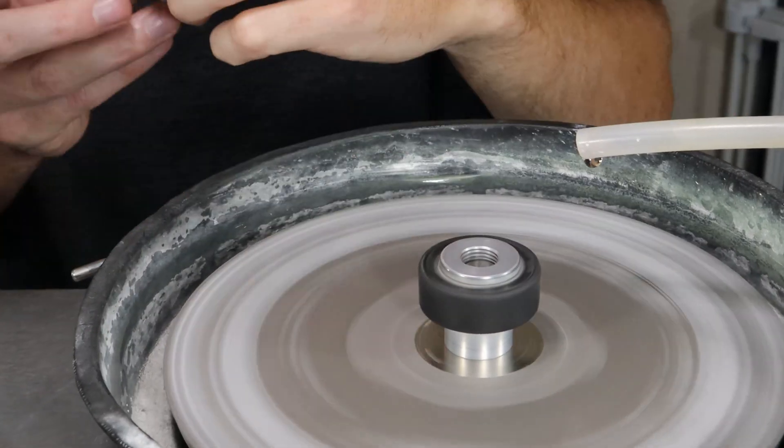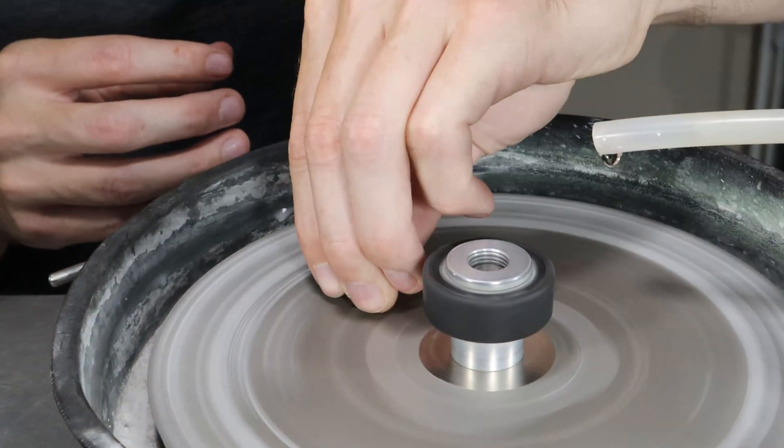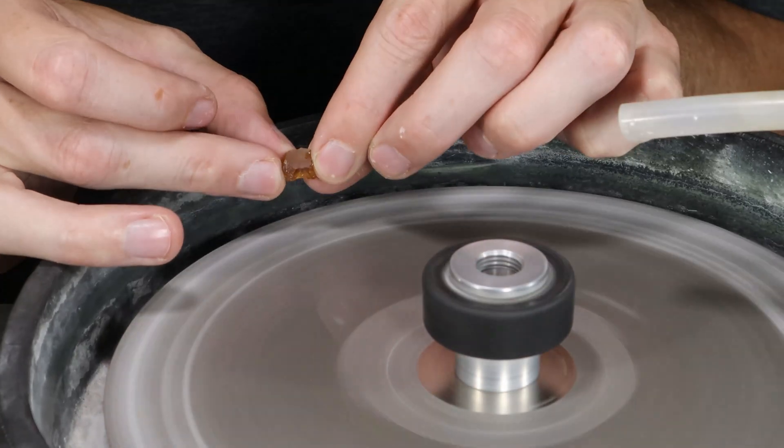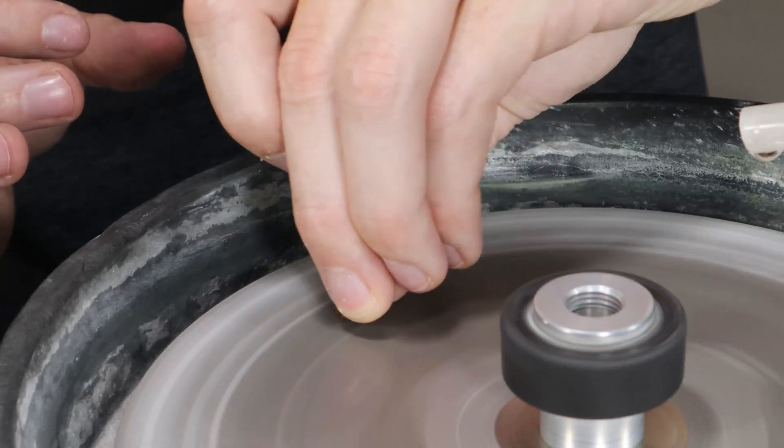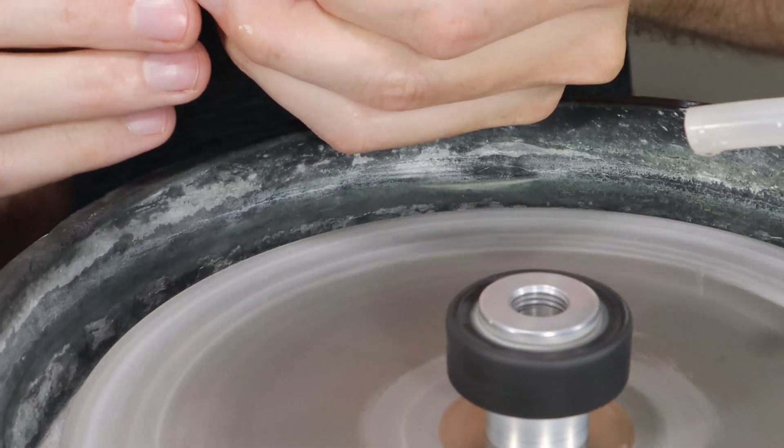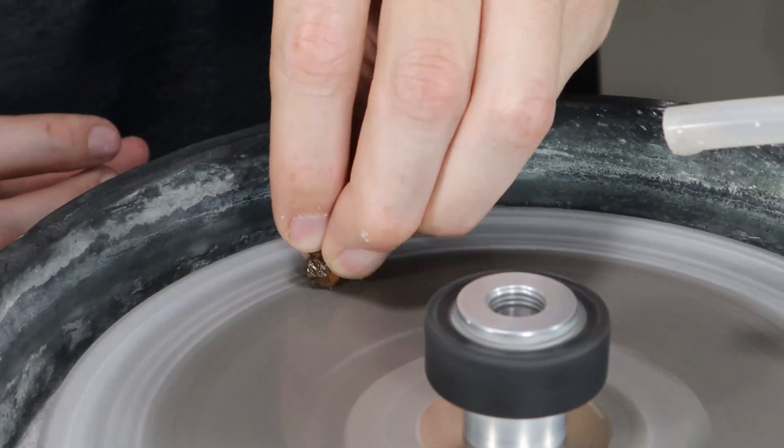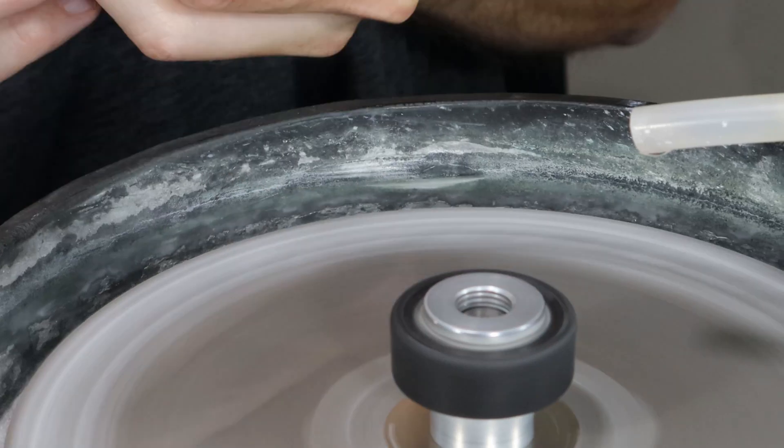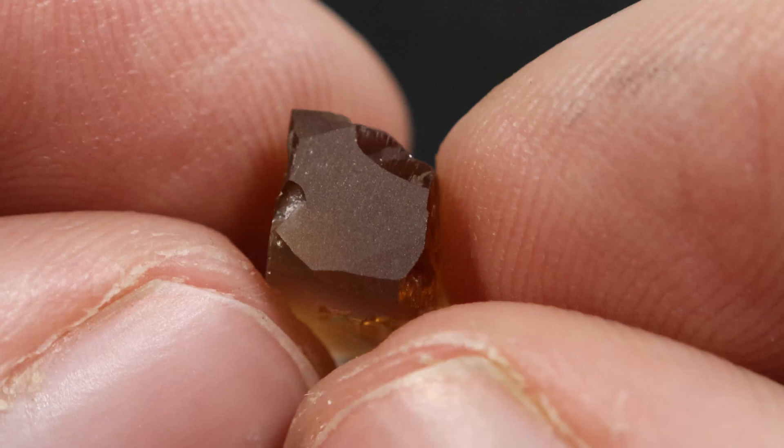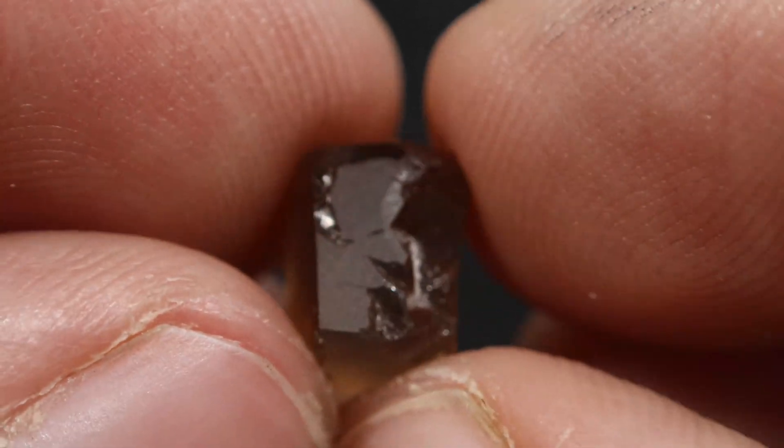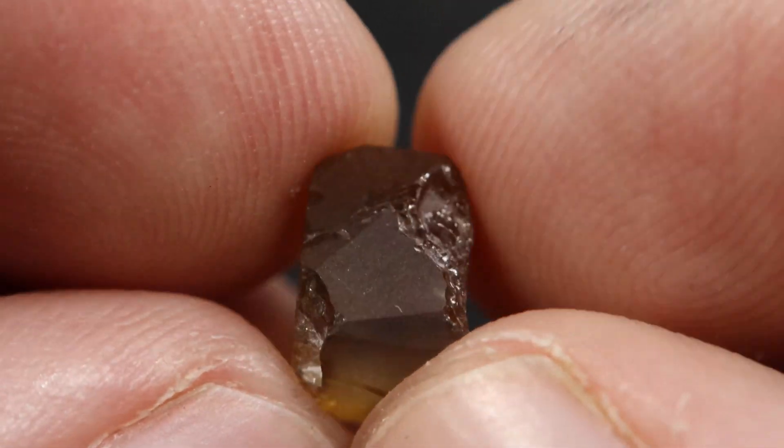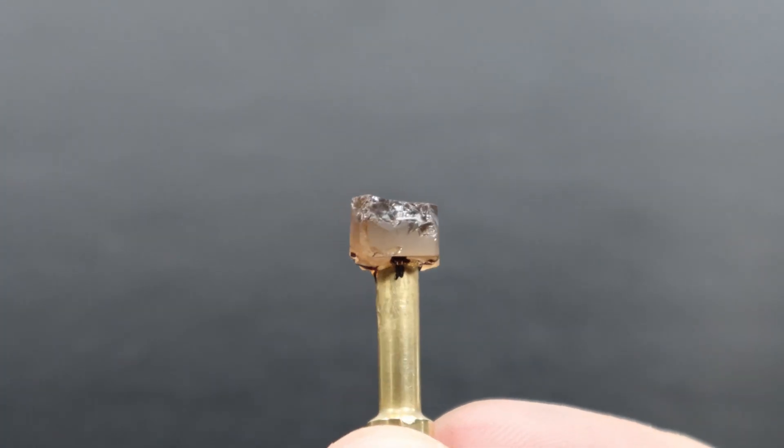Now before I dop the stone, I use a 600 diamond grit lap to grind a nice flat spot for attaching the dop stick. I also grind the edges of the stone where the girdle is going to be to slightly pre-form the piece into a general shape and smooth out the stone's outline into a more symmetrical shape. The pre-forming also grinds out any bumps or divots along the edge which allows for more accurate measuring for finding the center point for attaching the dop stick.